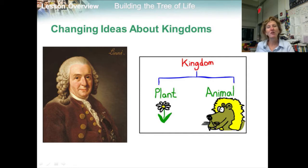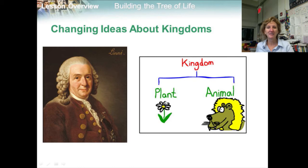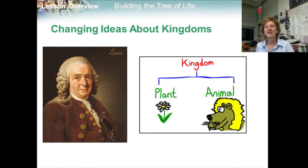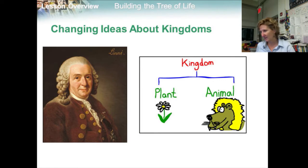As biologists learned more and more about the natural world, they realized that Linnaeus' two kingdoms — Animalia and Plantae — did not reflect the full diversity of life. Classification systems have changed dramatically since Linnaeus' time, and hypotheses about relationships among organisms are still changing today as new data are gathered.